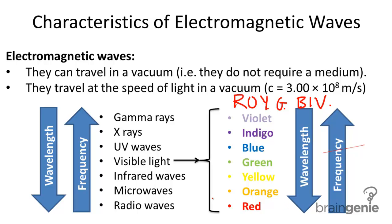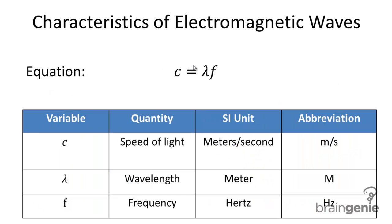The only equation you need to know is c equals wavelength times frequency. C is the speed of light, so this is essentially the same as v equals lambda times frequency, except c is the speed of light. C is 3.00 times 10 to the eighth meters per second, and this is a constant for all forms of EM waves in a vacuum.